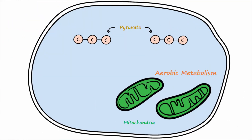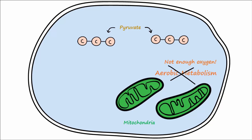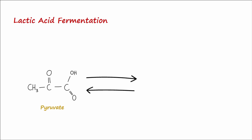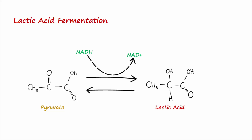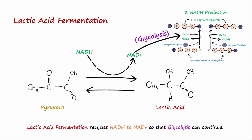From here, the two pyruvate molecules can enter the mitochondria and continue with aerobic metabolism. However, if there is not enough oxygen available for aerobic metabolism to continue, the body has a way to continue glycolysis so that it can keep making ATP without oxygen. This process is called lactic acid fermentation. In lactic acid fermentation, pyruvate is converted into lactic acid, and the NADH from glycolysis is recycled back into NAD+ so that glycolysis can use the NAD+ and continue. NAD+ is an essential starting molecule for step 3 of glycolysis.